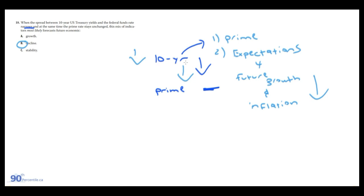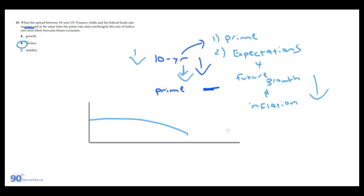This concept of the spread decreasing is also related to when you hear about inverting yield curves forecasting a future economic recession. For example, if the 10-year yield is lower than the 1-year yield, that's because they're forecasting that 10 years from now there's going to be lower growth and lower inflation.